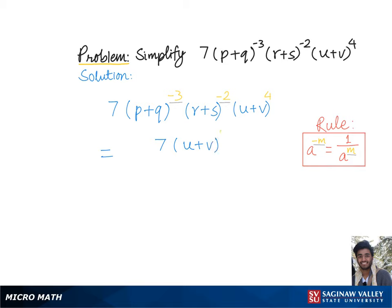us 7 times u plus v to the 4th power over p plus q to the 3rd power times r plus s to the 2nd power which is the final answer since all our exponents are now positive.